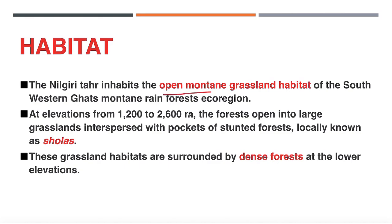Regarding habitat, Nilgiri Tahr is found in open mountains in the Southern Western Ghats region. It is mainly found at elevations of 1,200 to 2,600 meters. At higher elevations, forests open into large grasslands with stunted forests, which are locally called sholas. In NCERT, we also read about open mountain grasslands interspersed with stunted forests.